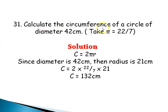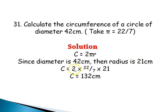Question 31: Calculate the circumference of a circle with diameter 42 centimeters. Take pi as 22/7. The formula is 2πr. Since the diameter is 42, the radius is 42 divided by 2, which is 21 centimeters. So circumference equals 2 times 22/7 times 21. Simplifying: 7 cancels to give 2 times 22 times 3, which equals 132 centimeters.